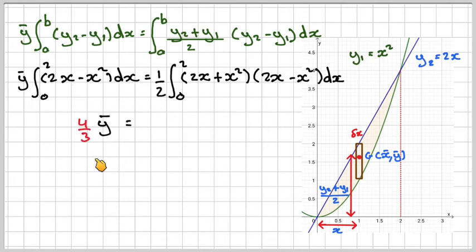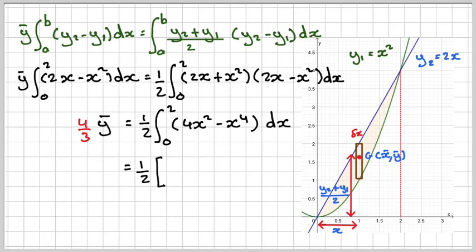We've already worked this out to be 4 thirds y-bar equals a half of the integral of 4x squared minus x to the fourth, using a squared minus b squared is a plus b times a minus b. So integrating gives me a half times 4x cubed over 3 minus x to the 5 over 5 from 0 to 2.